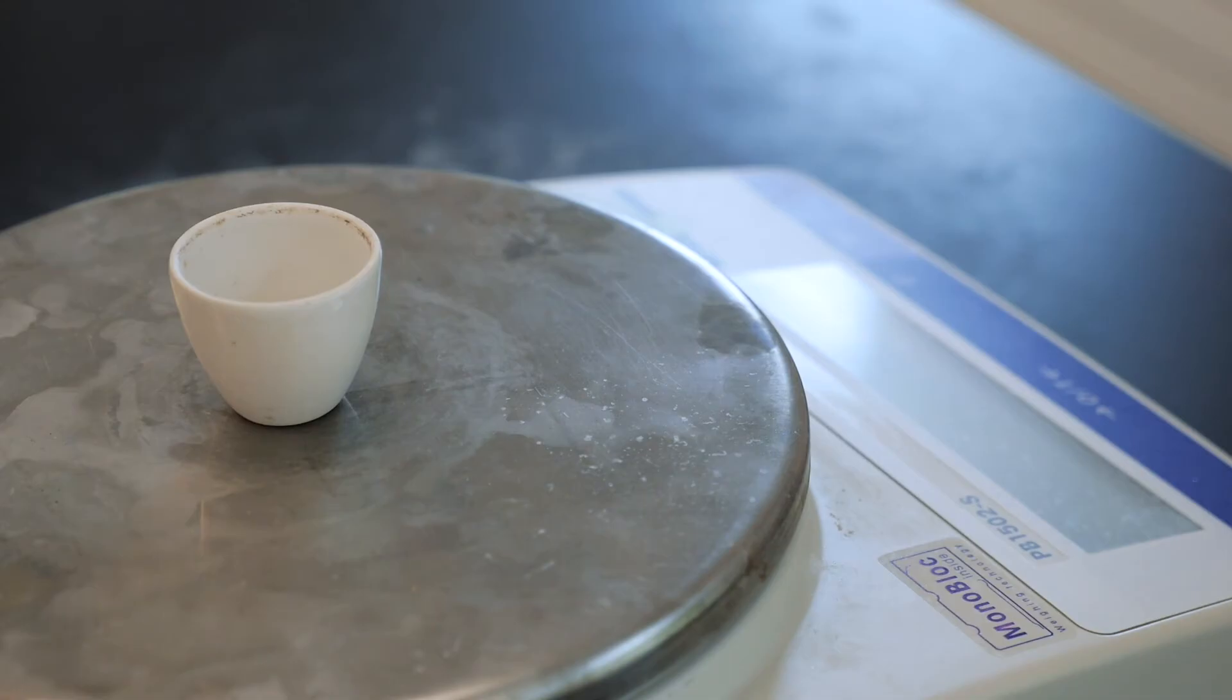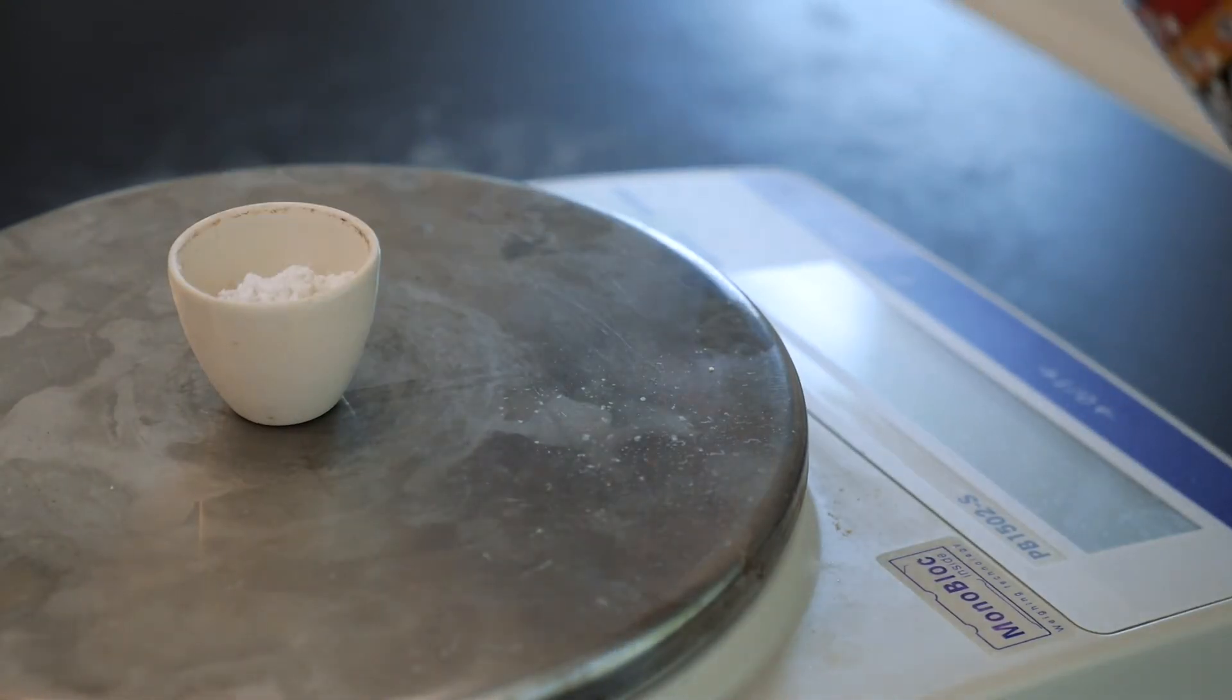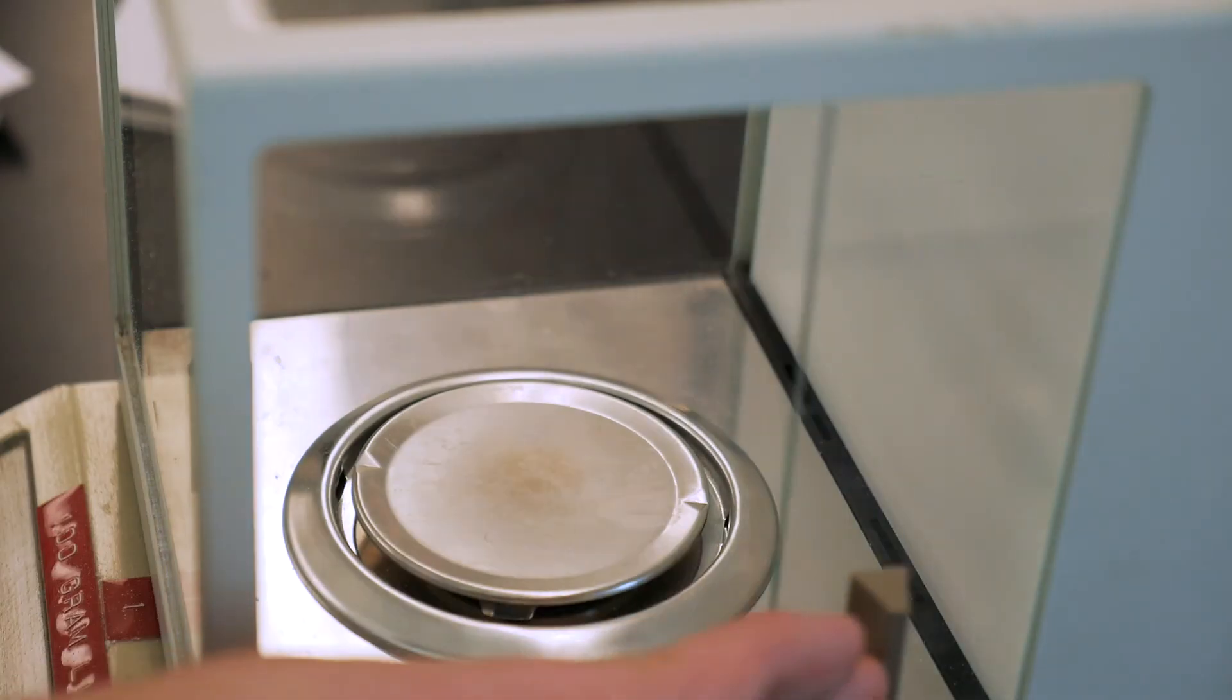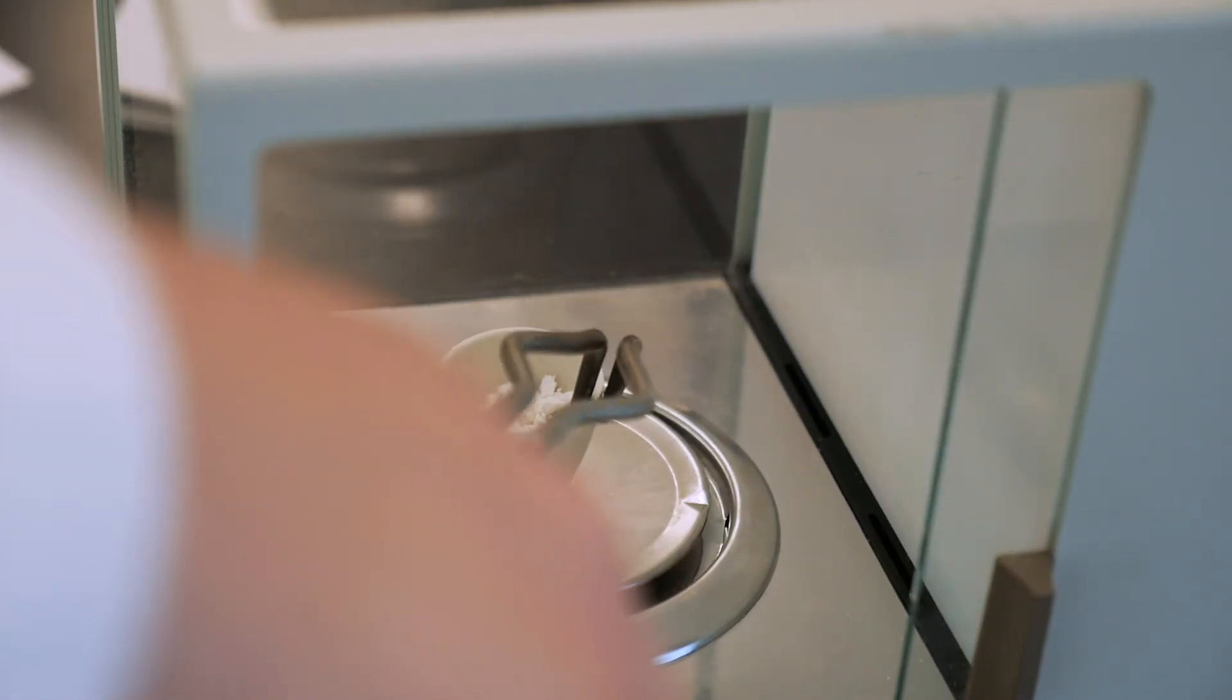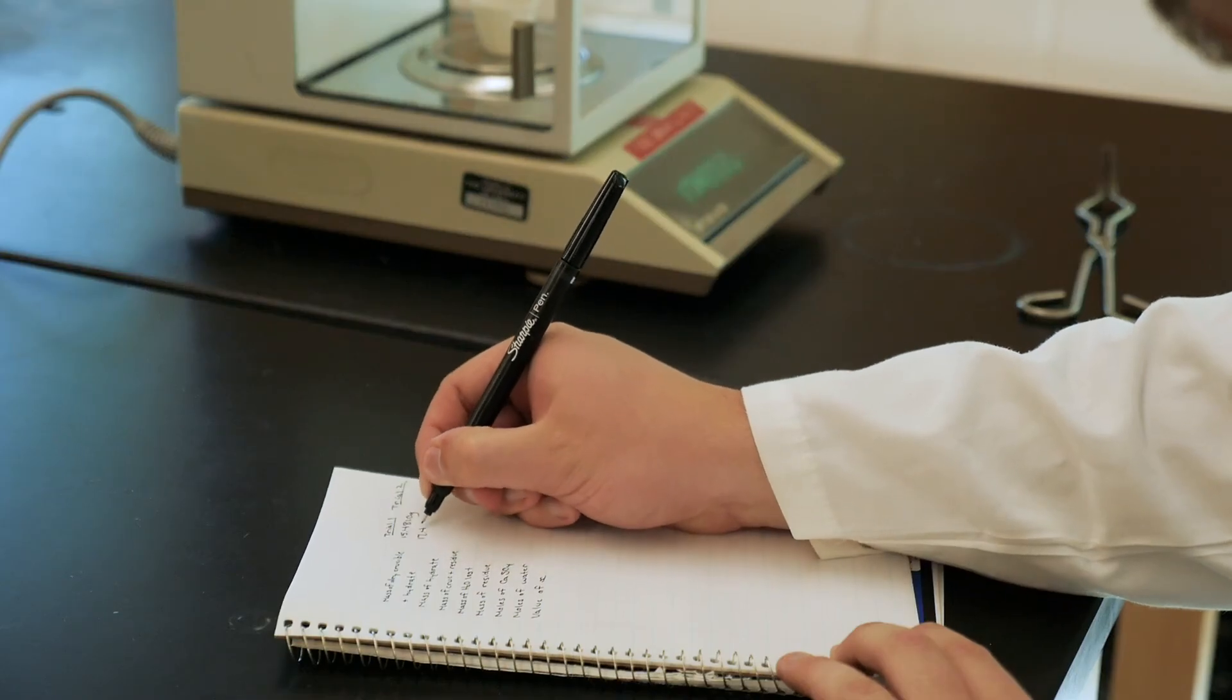Now it's time to get your gypsum sample. So tare the weight of your crucible on one of the top loading balances, and then add about 2 grams of gypsum to it. You'll need to know the precise weight of your sample for this experiment, so transfer the crucible to an analytical balance and record its weight to the full 4 decimal places that the instrument reads.